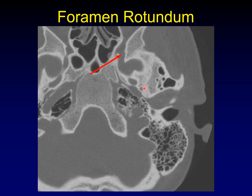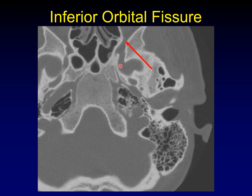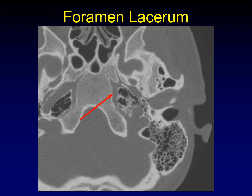Here's foramen rotundum, right where we were talking about it before, running a short distance along the anterior skull base. Just in front of that is the inferior orbital fissure, just like we were talking about on previous images. What about this triangular foramen right here? This is foramen lacerum, just lateral to the clivus. Not much goes through foramen lacerum — a few sympathetic branches and a few small vessels, but no large structures.